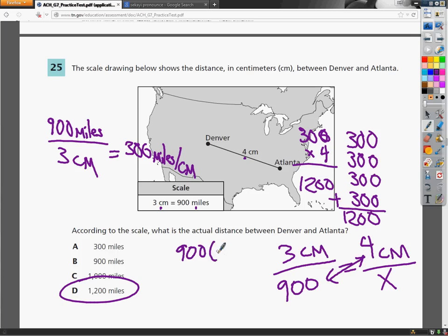900 times 4 equals 3x. So I do 900 times 4 and I get 3600 equals 3 times x. To get rid of the multiply, I need to divide here. So I divide both sides by 3 and x gives me 1200.